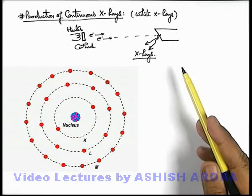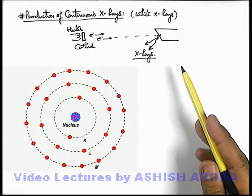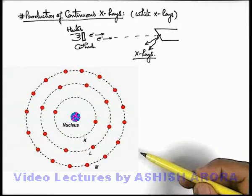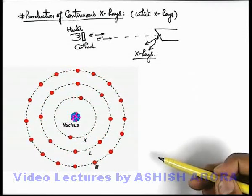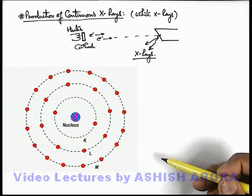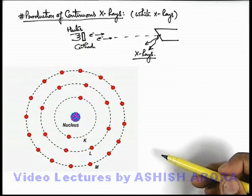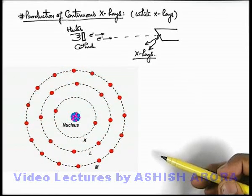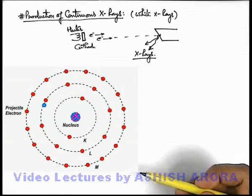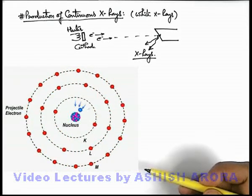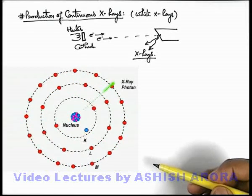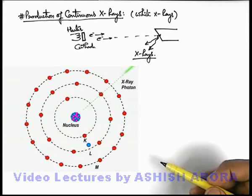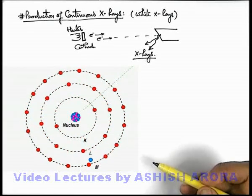And as we already discussed that anode is made up of quite a heavy metal that's why we can see that most of the inner orbits are completely filled with the electrons because its atomic number is very high. And here we can see if an external cathode ray electron comes and collide with the anode and when it penetrates into the anode atom